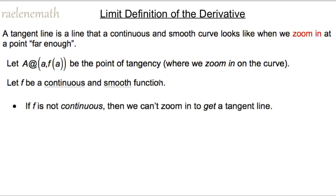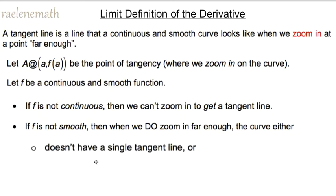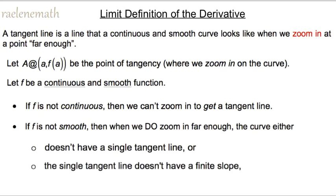If the function isn't continuous, we can't zoom in somewhere — there's not a point on the graph where we could zoom in and have connected points on either side. Also, if the function isn't smooth, then when we do zoom in far enough the graph won't look like a single tangent line with a finite slope. We want to make sure we get a single tangent line with a finite slope, because it's not okay to have a single tangent line with an infinite slope.